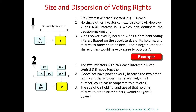If we consider the size and dispersions of the other shareholders, in this case we have been told that the other 52% shareholders are widely dispersed. Basically, each of them has got 1% or even less. No single other investor can exercise power.